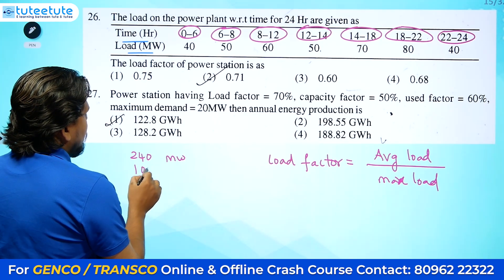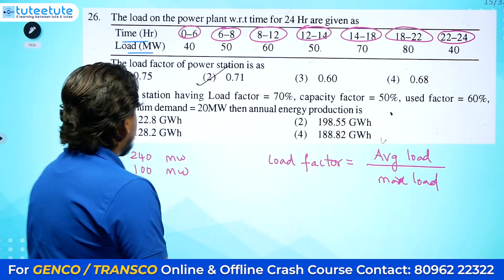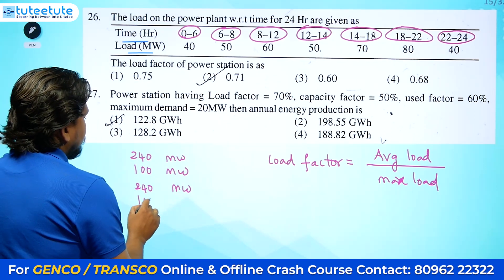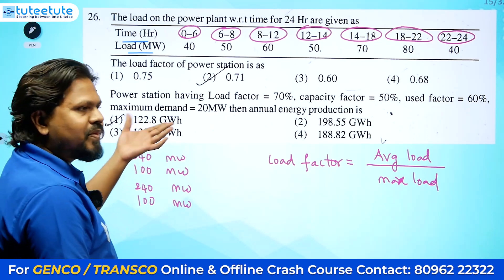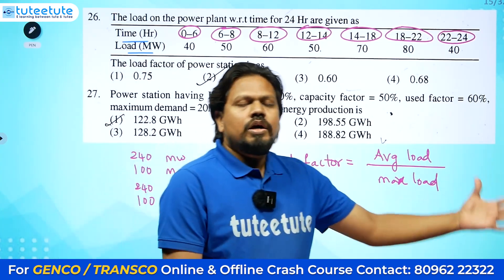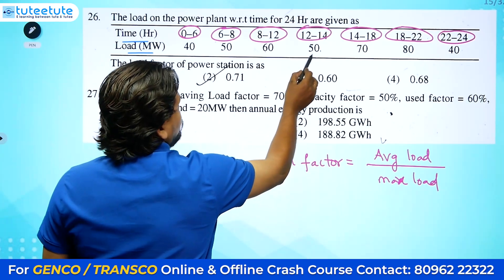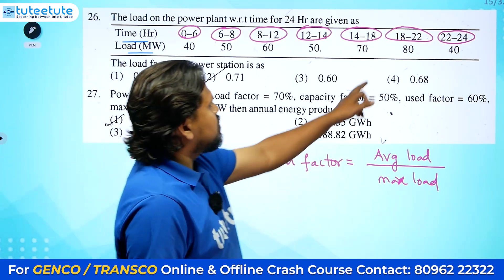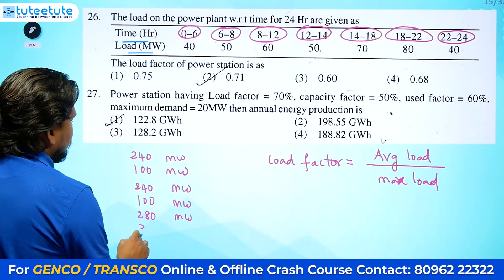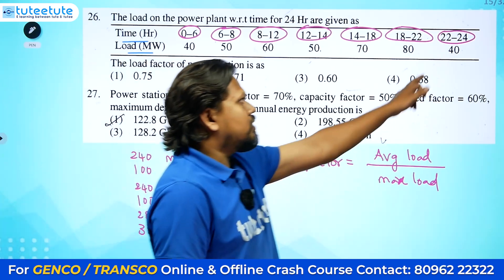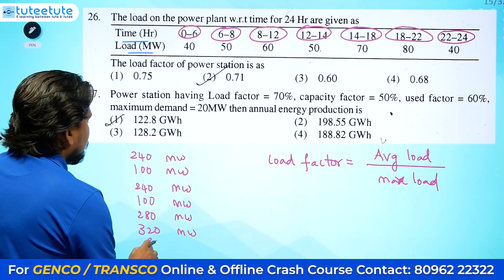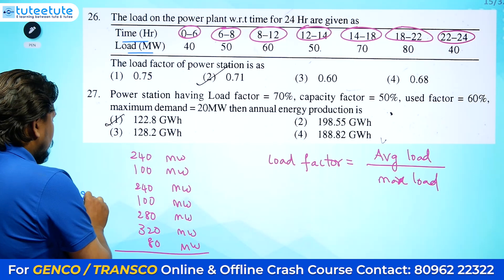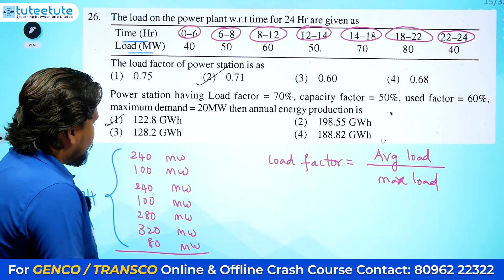For 50 MW for 2 hours: 100 MWh. For 60 MW for 4 hours: 240 MWh. Again 50 MW for 2 hours: 100 MWh. I am calculating the entire load for the day. For 70 MW for 2 hours: 280 MWh. For 80 MW for 4 hours: 320 MWh. For 40 MW for 2 hours: 80 MWh. This is the complete load for the entire 24-hour day.